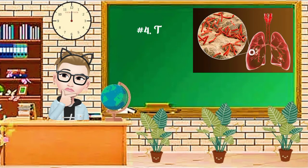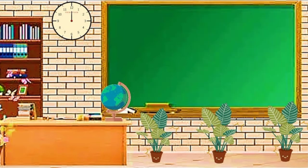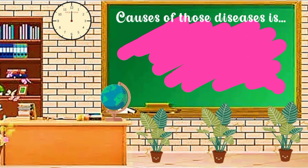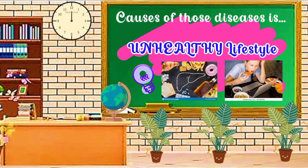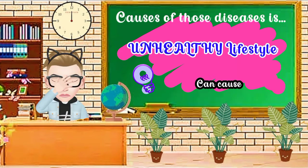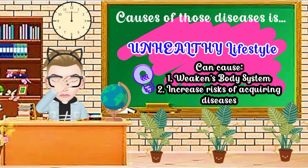And lastly, tuberculosis — the correct answer is a respiratory disease. Now, what are the causes of these respiratory and circulatory diseases? The answer is our unhealthy lifestyle. Because of an unhealthy lifestyle, it weakens our body system and increases our risk of acquiring diseases.